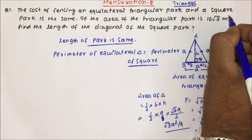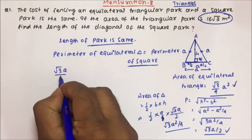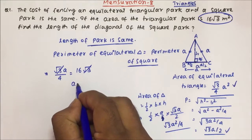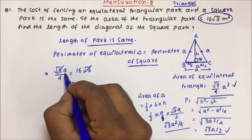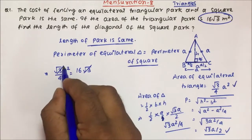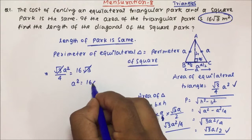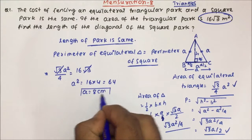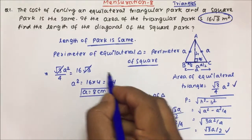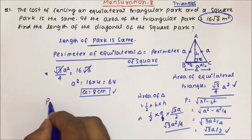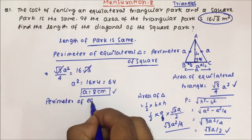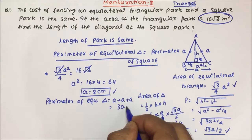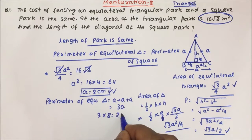Now, the area of the triangular park is given as 16√3. So √3/4 × a² = 16√3. Root 3 and root 3 cancel, so a² = 16 × 4 = 64. So a will become 8 centimeter. Now, perimeter of equilateral triangle = a + a + a = 3a = 3 × 8 = 24 centimeter.